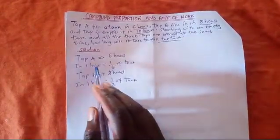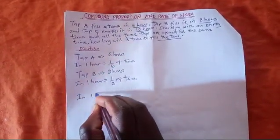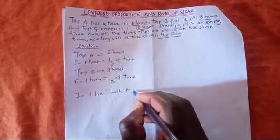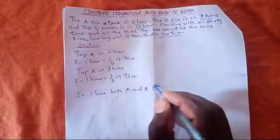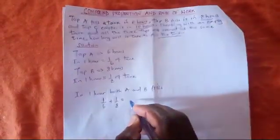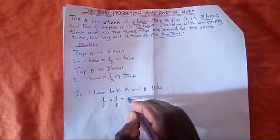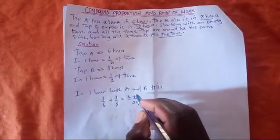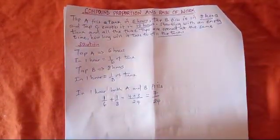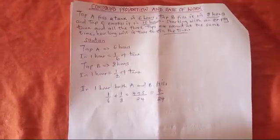In one hour, both A and B fill: we add the two fractions, one over six plus one over eight. We find the LCM, which is 24. Six goes into 24 four times, so four times one is four. Eight goes into 24 three times, so three times one is three. The fraction filled by both taps in one hour is seven over 24.